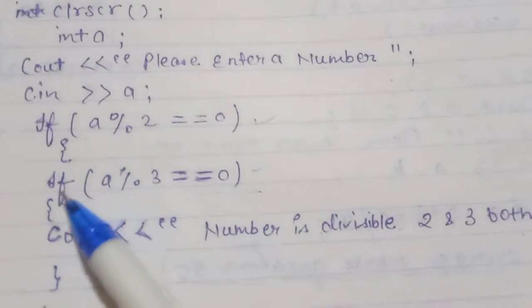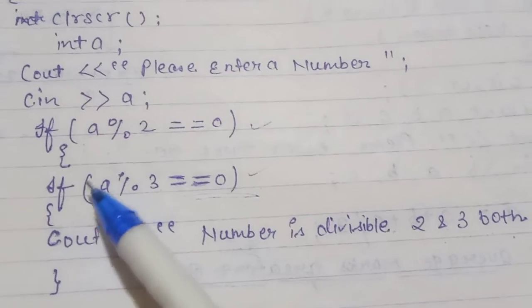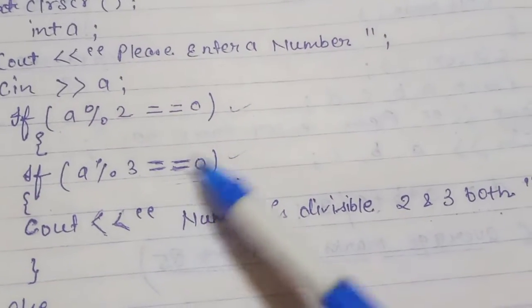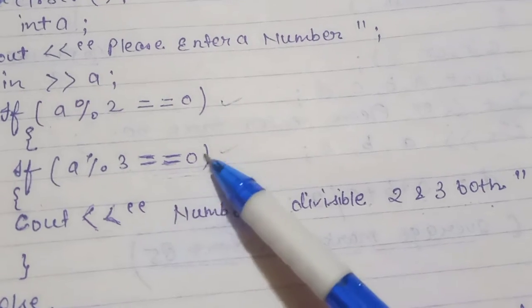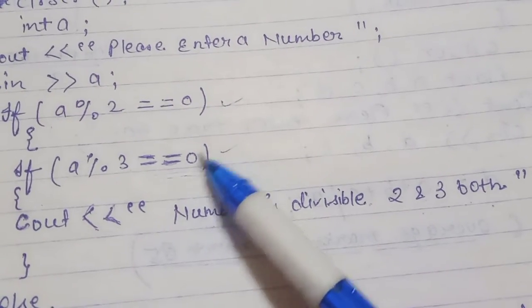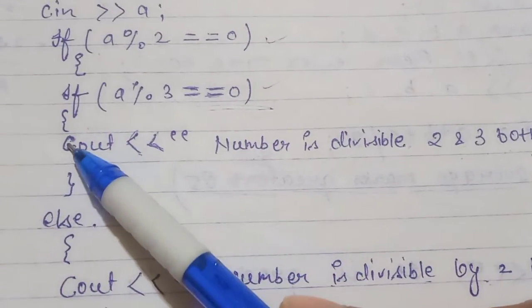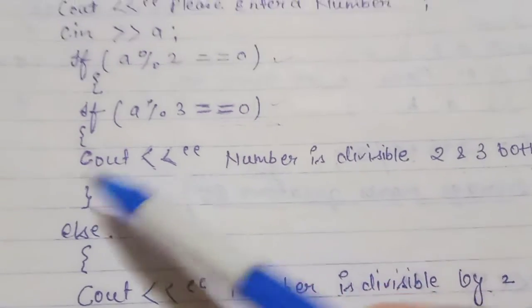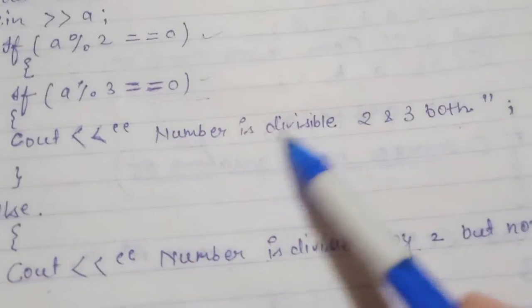Inside the nested if, we check if a % 3 == 0 — that is, if the number is also divisible by 3. If the remainder is 0, another opening curly brace starts, and then cout outputs the message: 'number is divisible by 2 and 3 both.'